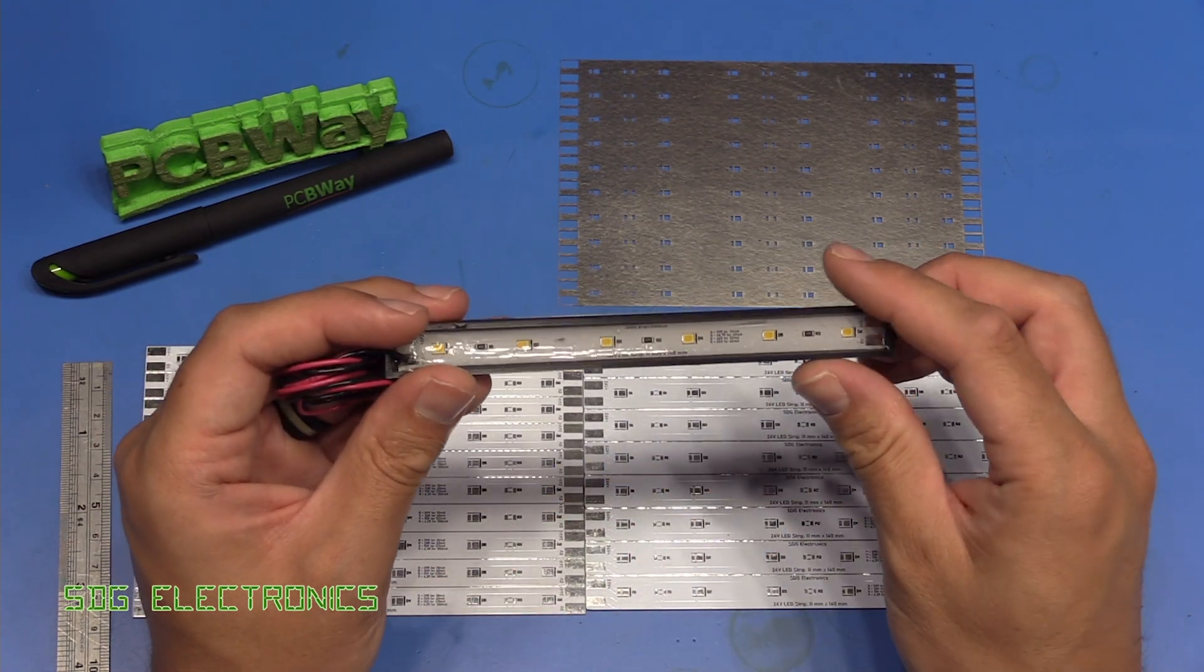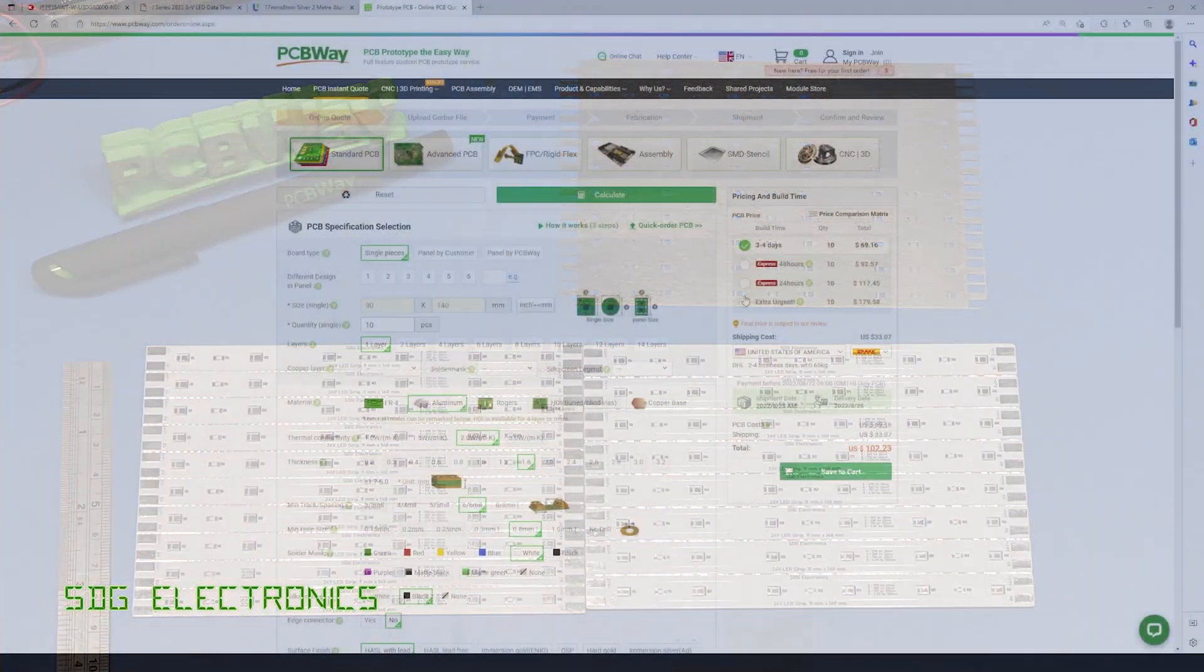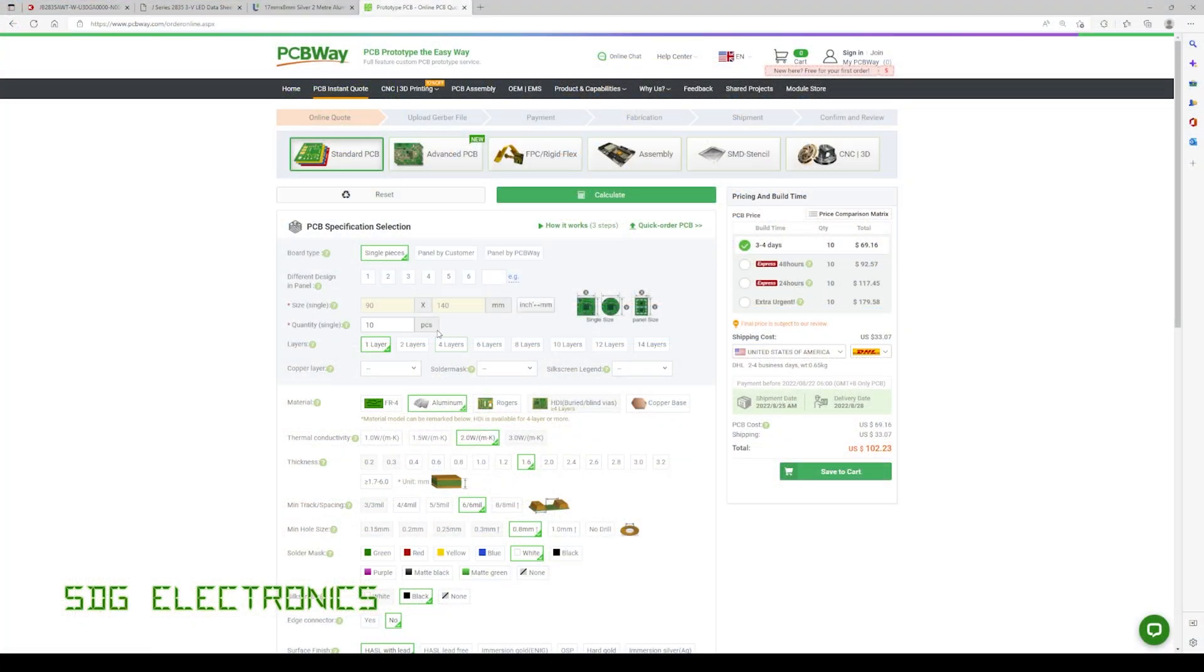So I redesigned the boards slightly and we had these made at PCBWay relatively inexpensively. These are panels approximately 90 by 140 millimeters and we had 10 panels of each different size made. We went for the highest thermal conductivity in that the two different designs here, one that is one millimeter thick and one that's 1.6 millimeters thick in white with the black silk screen.